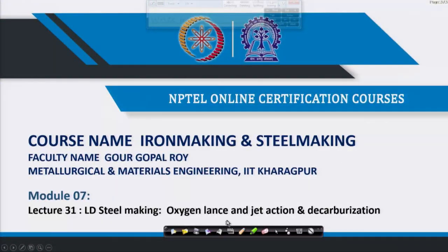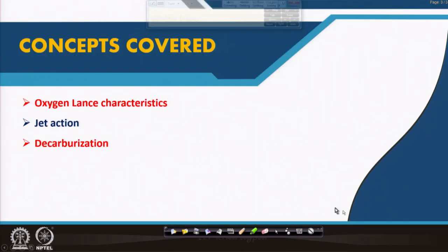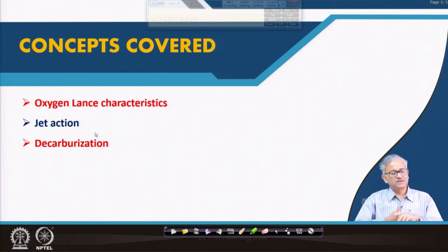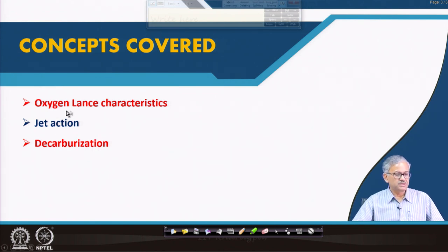Welcome. In this lecture we will continue LD steelmaking, discussing the oxygen lance, jet action, and decarburization. First we will discuss lance characteristics - the oxygen lance nozzle is very special. Then we will talk about jet action, which is the interaction of the oxygen jet with the metal bath. That interaction we need to understand, and also the very important reaction called decarburization.